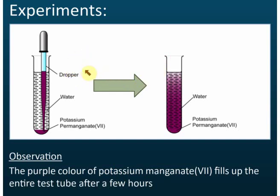Diffusion in liquids. We use potassium permanganate, and potassium permanganate's color is purple. We use droppers to drop the potassium permanganate here, and then after that you write...